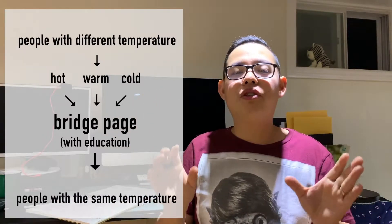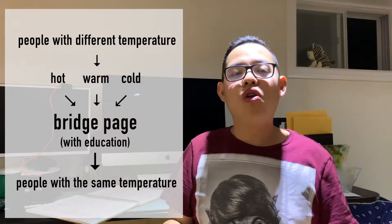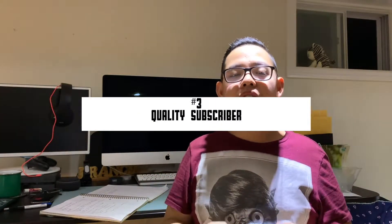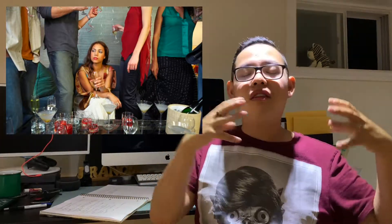You can match the bridge page to the specific temperature of that customer, so they all come up to the same level. The next phase is the quality subscriber. When they come through the door via the bridge page, you need to find a way to connect with your customer — otherwise it's like going to a party where everyone is a stranger. The only way to stay in touch is to ask for some kind of contact information.